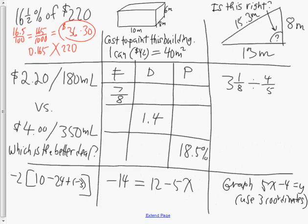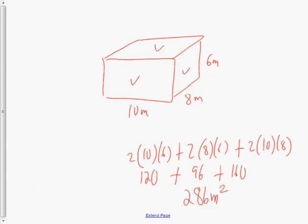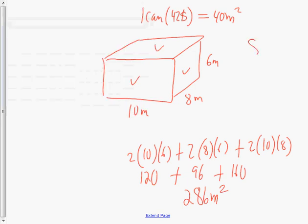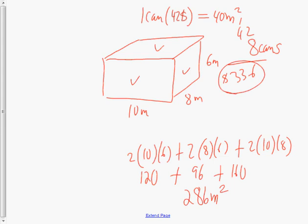The second part says if one can — which is $42 — can paint 40 square meters, how much will it cost to paint the building? We take our 286 square meters and divide by 40, which tells us we need 7.15 cans. Since you can't buy a partial can, we need to buy 8 cans. At $42 each, that's 8 times 42 which equals $336.